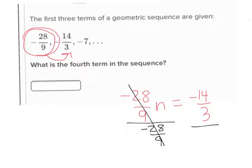Now what do I do to solve for n? So I will divide by negative 28 over 9 on both sides. These cancel. Divide by negative 28 over 9 on both sides. So in my calculator, I'm putting negative 14 thirds divided by negative 28 ninths, and that'll tell you what n equals.